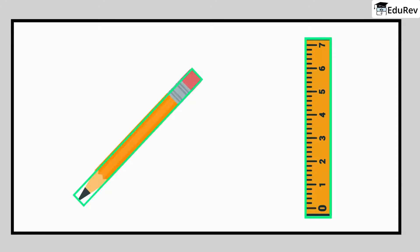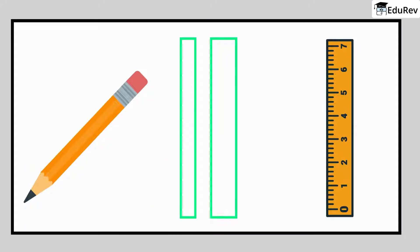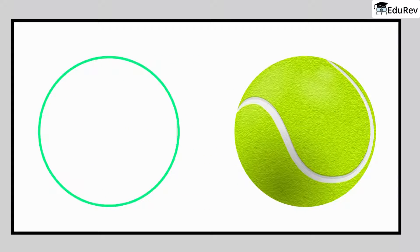Long is anything that has a shape like your pencil or your ruler. See, this shape is long. And round is anything that has a shape like your ball. See, this shape is round.